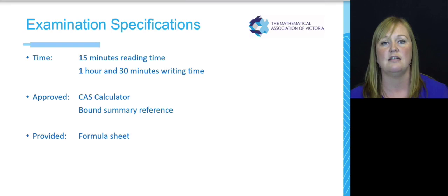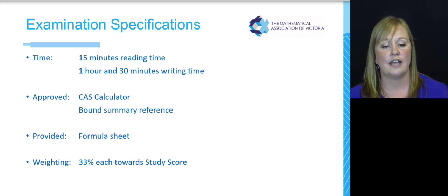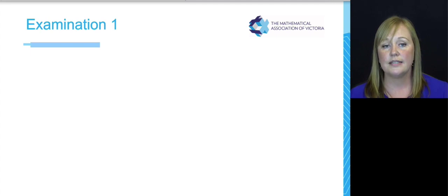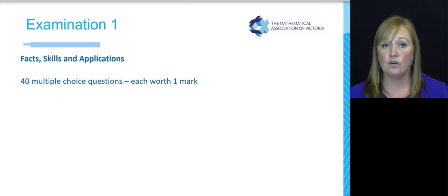Get a past year's exam. Check that everything on that formula sheet is in your bound summary reference. 33% is what each exam is worth and that goes towards your study score. So 33% for exam one, 33% for exam two, and then all of your SACs have contributed 34%.